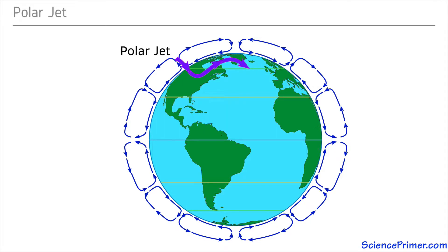The path of the polar jet is centered around 60 degrees latitude, but as it travels from west to east, the band of fast-moving air meanders north and south creating waves.